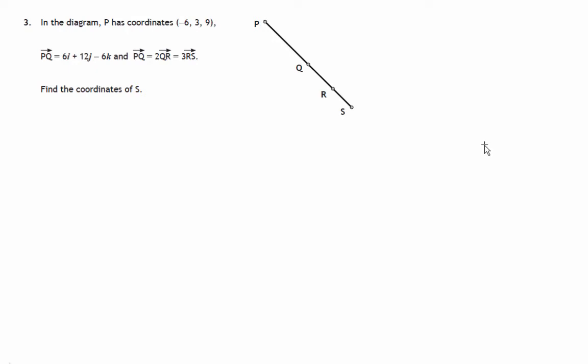This is question 3 from paper 1 of the SQA New Higher Specimen paper. We've got a diagram where we know the coordinates of this point P, and we're told various pieces of information about P, Q, R, and S—various journeys between these points. And the ultimate aim is to find the coordinates of point S.